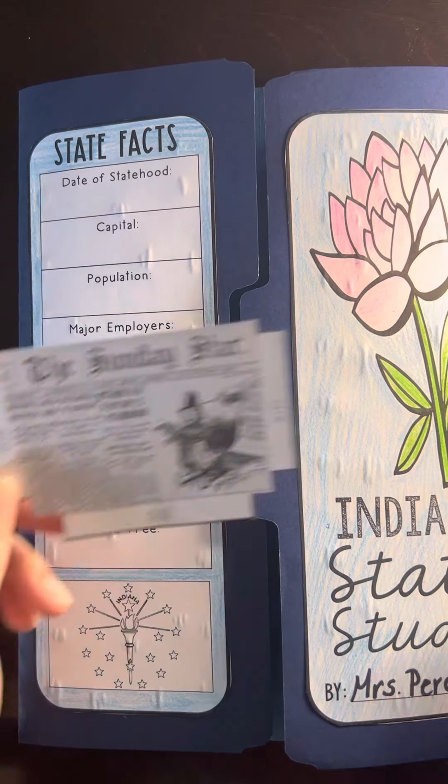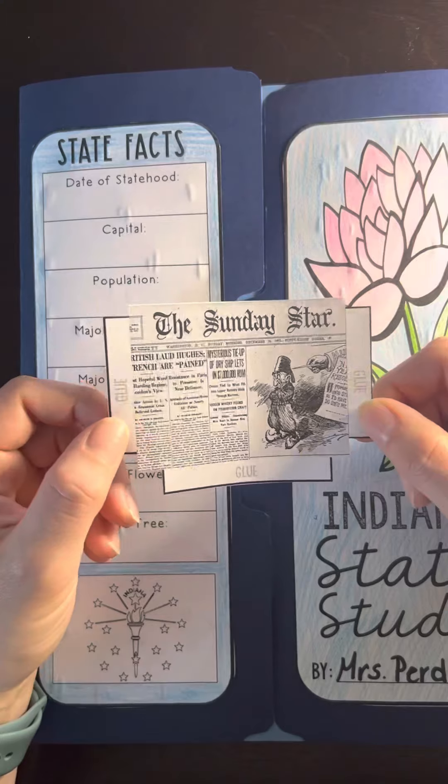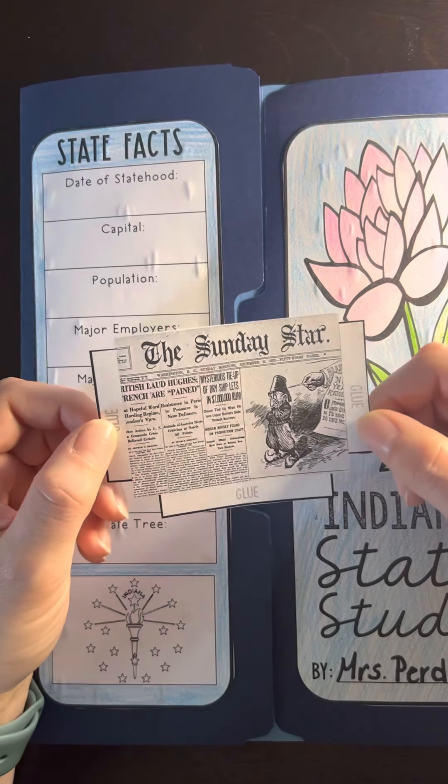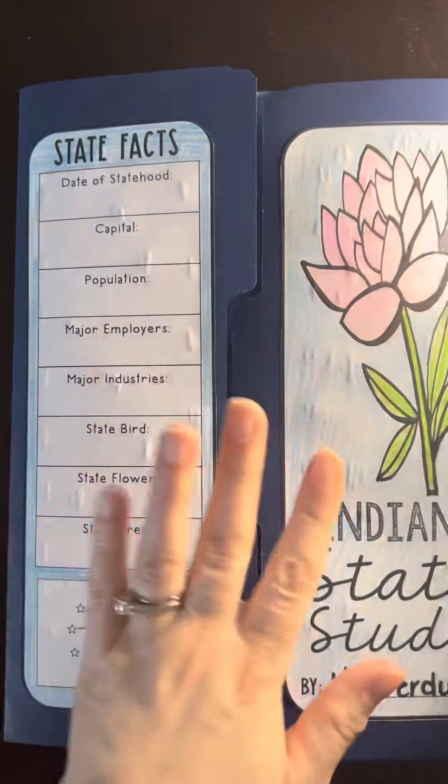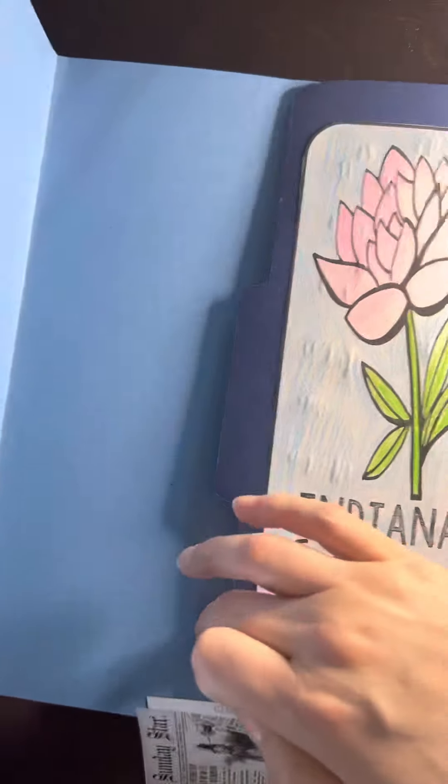Today we will be doing the newspaper section of the inside of our folder. We've already done the first part, we completed that in our last video. For this video we're going to open our folder and you'll see you have four long row sections.